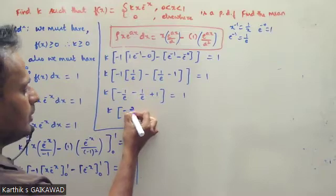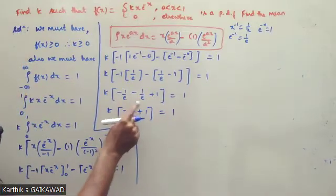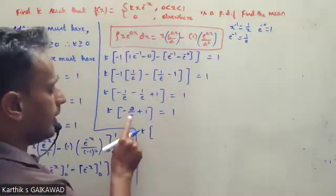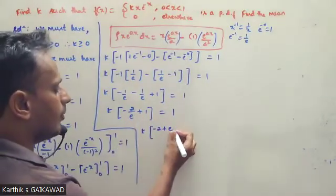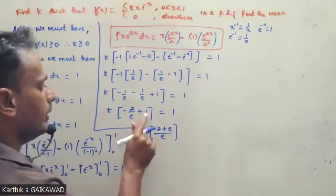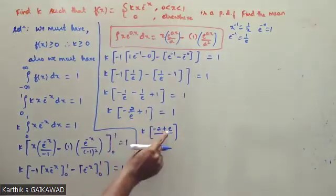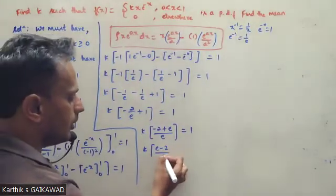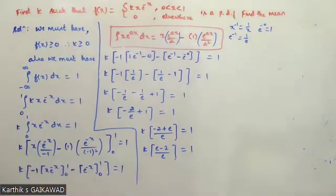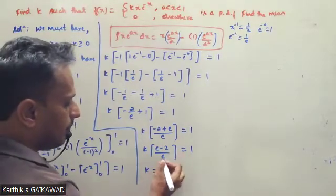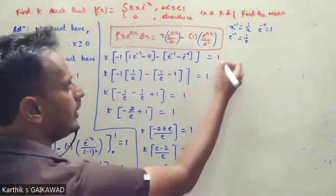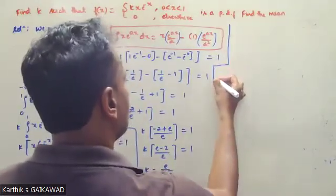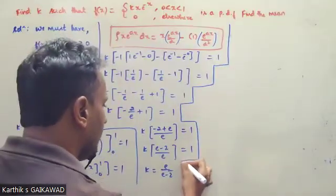We get minus 2 by e plus 1 equals 1/k. So e minus 2 by e equals 1/k. Cross-multiplying, k equals e divided by (e minus 2). This is the k value found. Next, we find the mean.